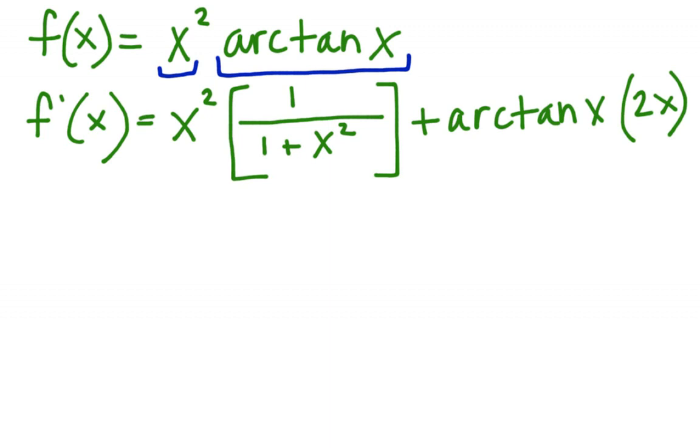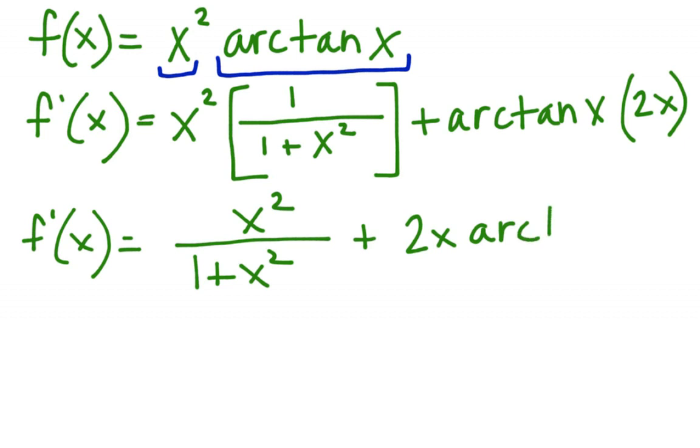So this can be cleaned up a little bit. f prime of x equals x squared over 1 plus x squared, plus 2x times arctan(x).